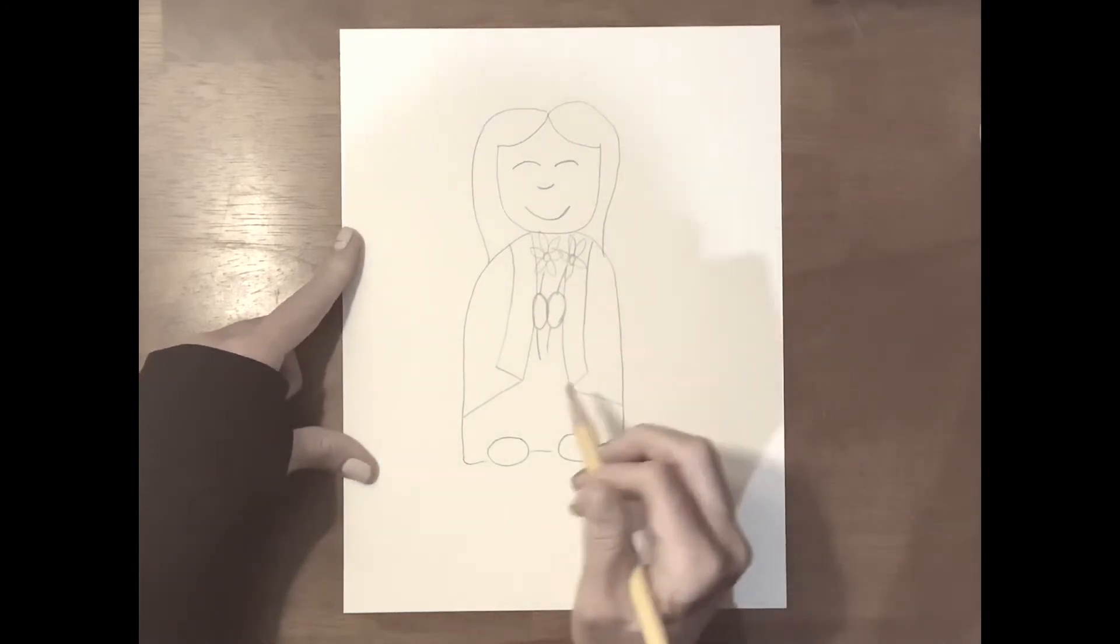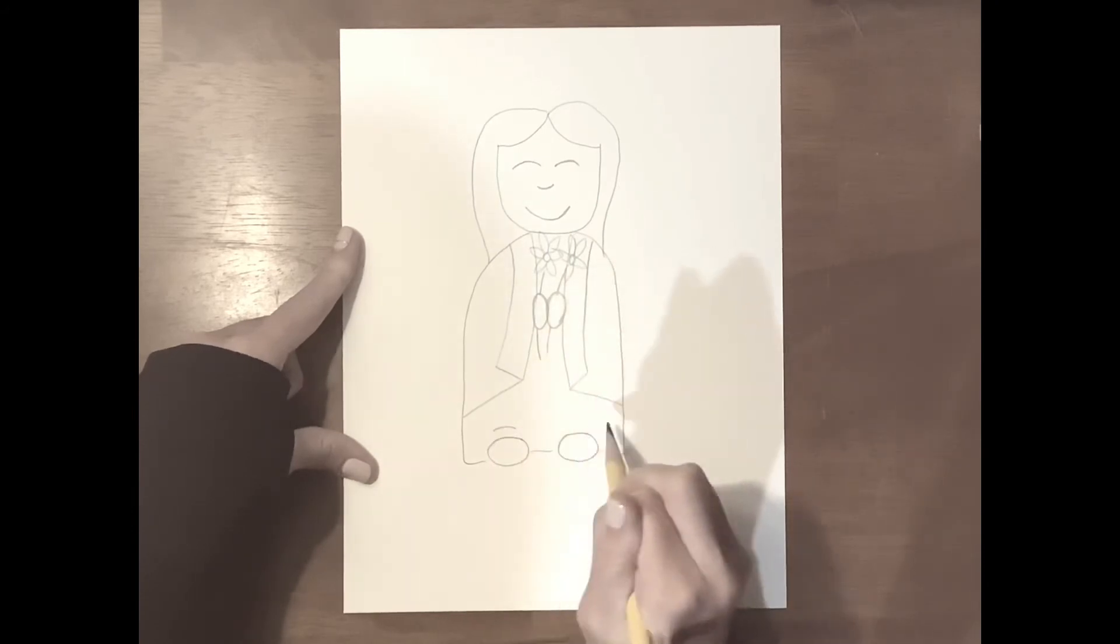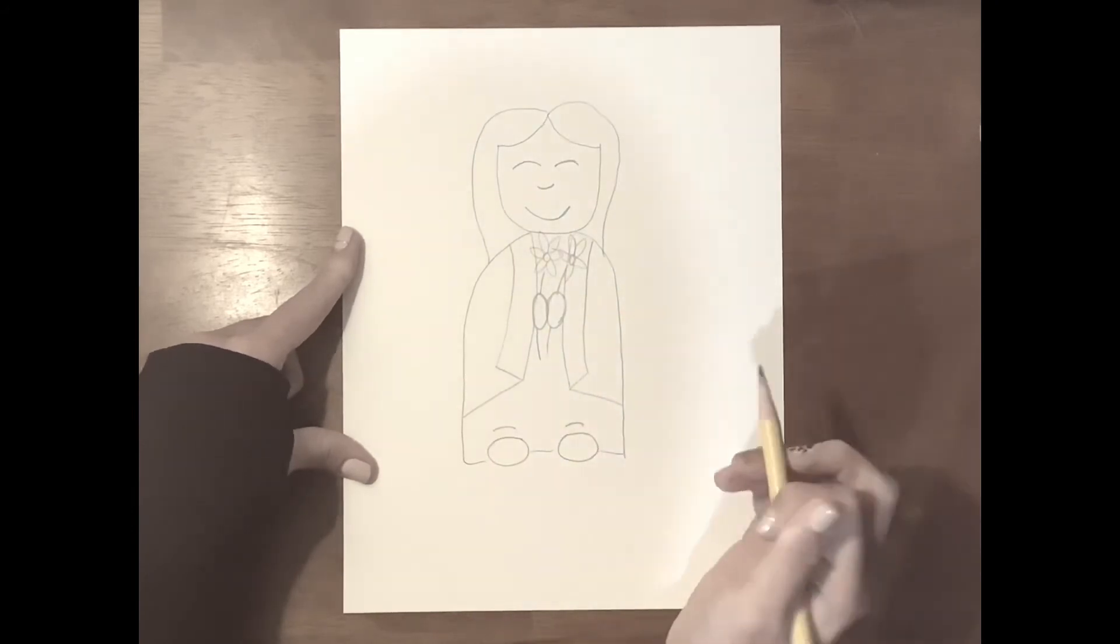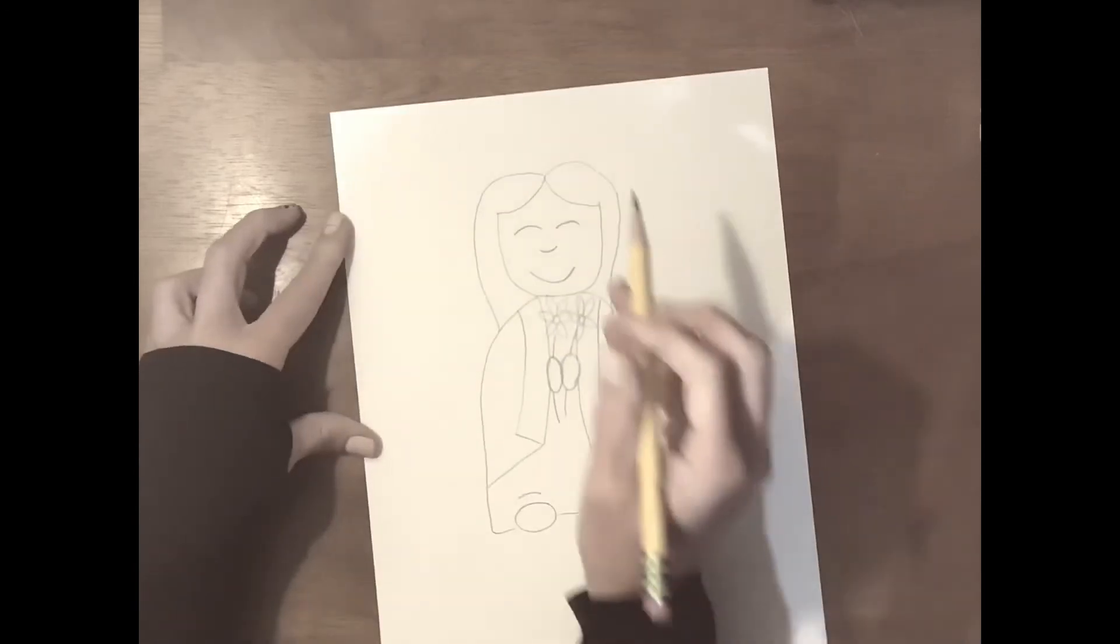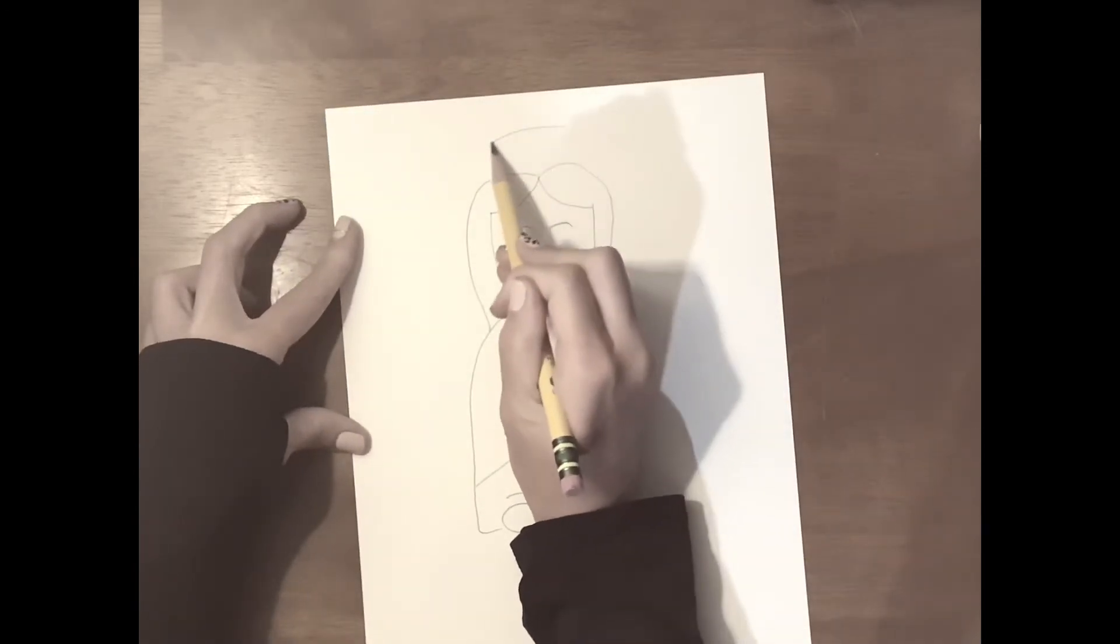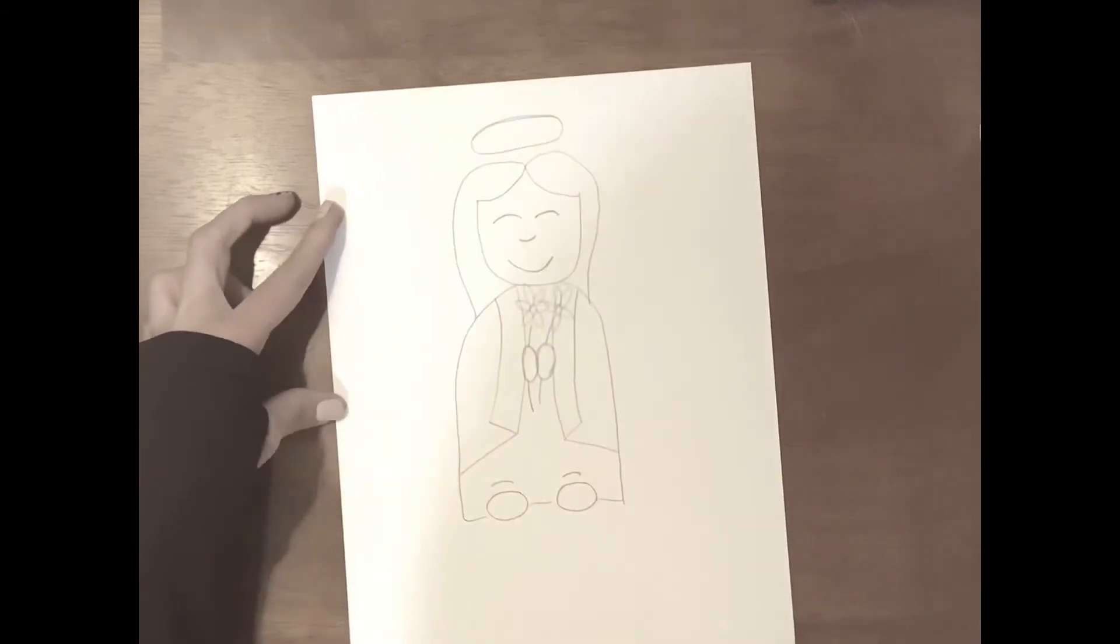And now, just a little detail over her shoe. Her little dress is coming up over her shoe. And we will finish her picture with a halo above.